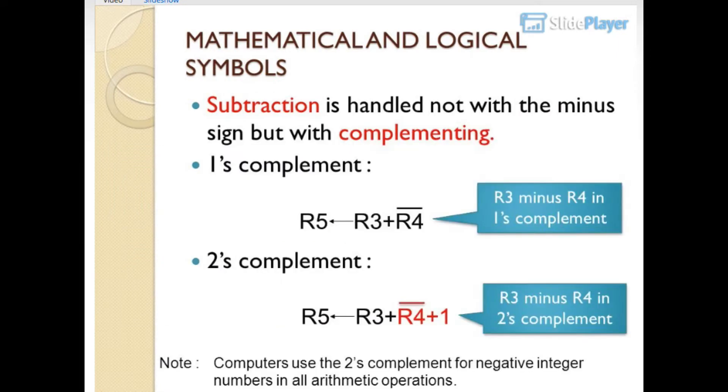Subtraction is handled not with the minus sign but with complementing. 1's complement or 2's complement. R3 minus R4 in 1's complement is R5 gets R3 plus R4 bar. R3 minus R4 in 2's complement is R5 gets R3 plus R4 bar plus 1. Note: computers use the 2's complement for negative integer numbers in all arithmetic operations.